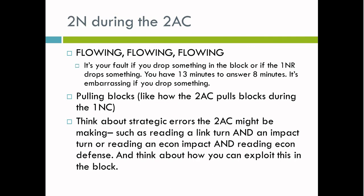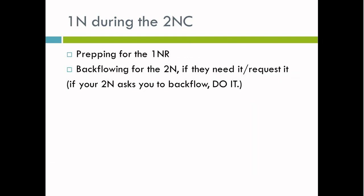The 2N during the 2AC should be flowing. It's your fault if you drop something in the block or if the 2NR drops something — you have 13 minutes to answer 8 minutes, so it's embarrassing if you drop something. Next, you should be pulling blocks, similar to how the 2AC pulls blocks during the 1NC. You should also be thinking about strategic errors the 2AC might be making, such as reading a link turn and an impact turn, or reading an economy impact while also reading econ defense, and think about how to exploit this in the block.